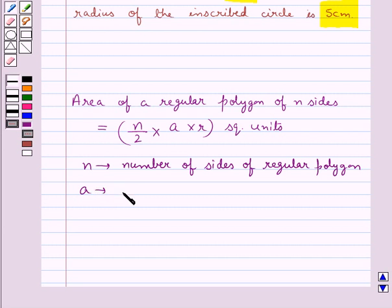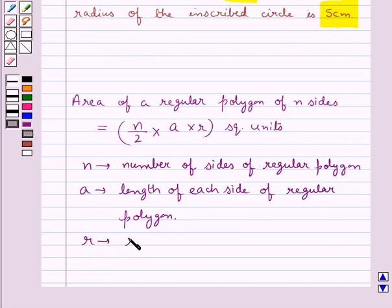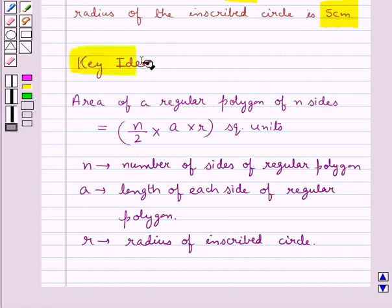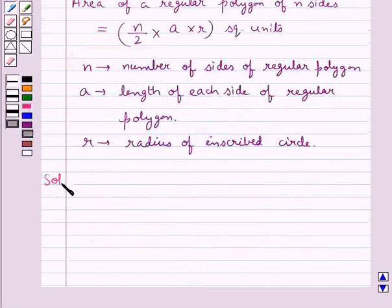A is the length of each side of regular polygon, and r is the radius of the inscribed circle. This is the key idea to be used for this question. Now let's move on to the solution.